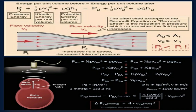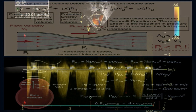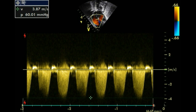The modified Bernoulli equation states that the pressure gradient between either side of a fixed obstruction with no significant length is proportional to the velocity of flow across that obstruction. Thus, the estimated pulmonary arterial pressure (in mmHg) equals four times the squared velocity of the tricuspid jet on continuous wave Doppler, plus the mean right atrial pressure, generally assumed to be around 2–5 mmHg.